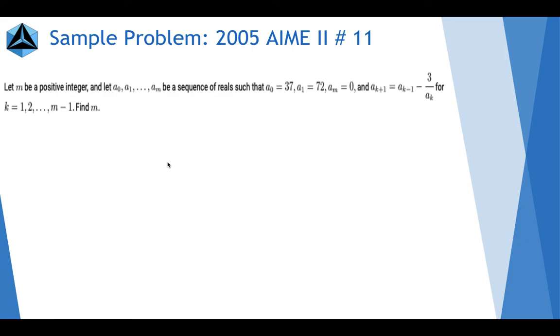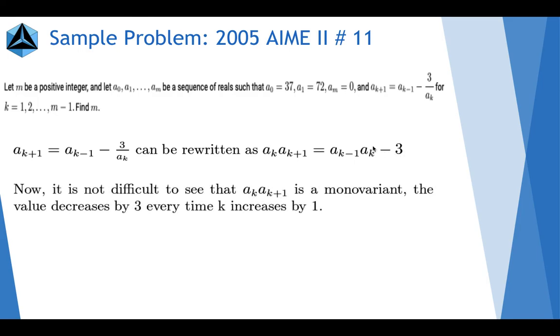Alright. So it looks really complicated at first. But then if you rewrite this, if you multiply ak on both sides, you get ak times ak plus 1 equals ak minus 1 times ak minus 3. And then this means that this is a monovariant because every time that k increases by 1, this value decreases by 3, as you can see in this formula.